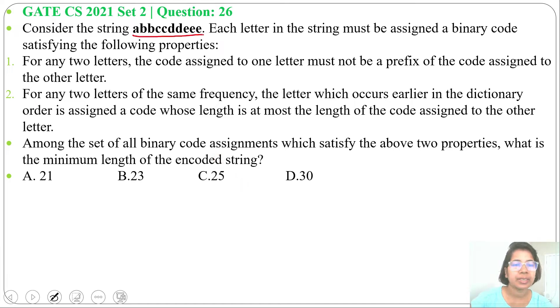In the question, one string is given, so from that we'll find the frequency of each character. Character 'a' is present once, frequency will be 1. Character 'b' is present twice, frequency will be 2. Character 'c' is present two times, so frequency will be 2. Then character 'd' is present two times, frequency will be 2. Character 'e' is present three times, so frequency will be 3.